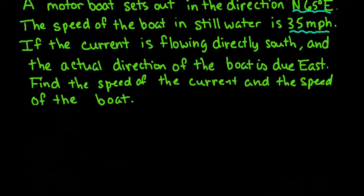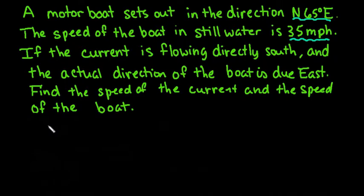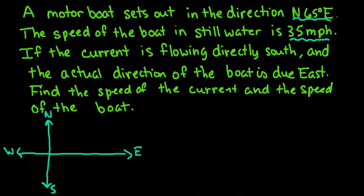It's important to draw a picture to help us understand what's going on. Remember that basically what's happening is we're dealing with our directionality. This is north, east, south, and west. Since we're going north 65 degrees east, that means from the north we're rotating 65 degrees towards the east.